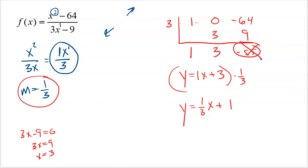Final summary: identify a slant asymptote when analyzing end behavior — if the top degree is bigger than the bottom, divide the leading terms. The end behavior of the rational function mirrors the quotient. If that quotient is linear, you have a slant asymptote parallel to it, giving you the slope. Then use synthetic division to find the full equation. If the slope from synthetic division doesn't match, divide everything by the denominator's zero value to correct it and find the y-intercept.